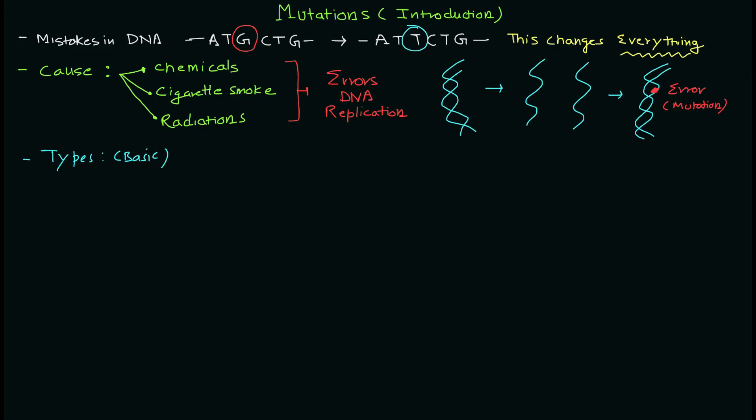Now let's move on to the types. When we talk about types, there are three basic types. First is replacement, second is deletion, and third is insertion. I can give you an example of the same sequence ATGCTG. Suppose you have one nucleotide that is replaced by another nucleotide - in this case, G is replaced by T. So it's a simple replacement.